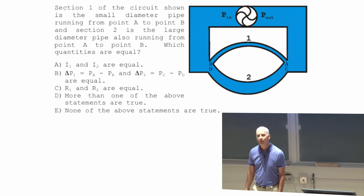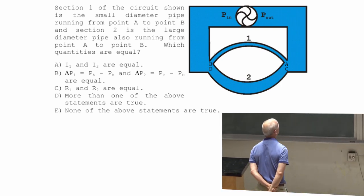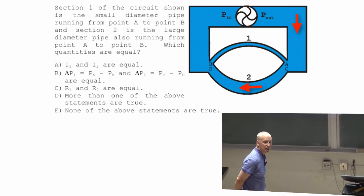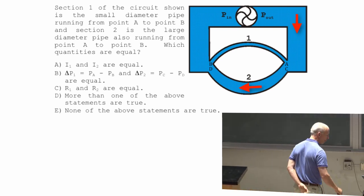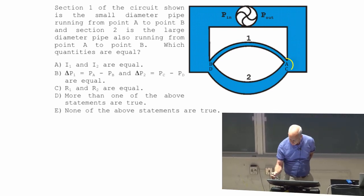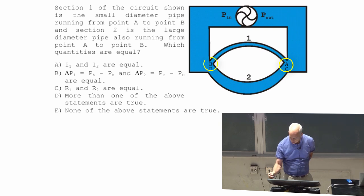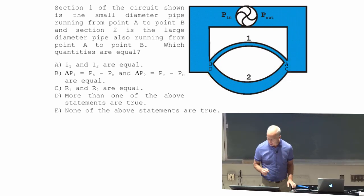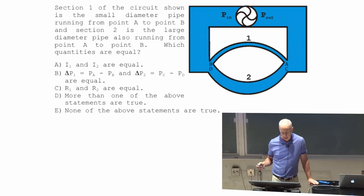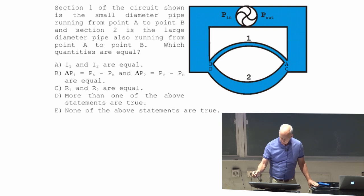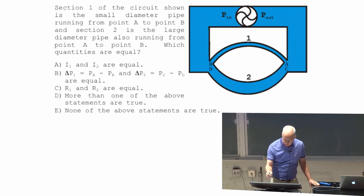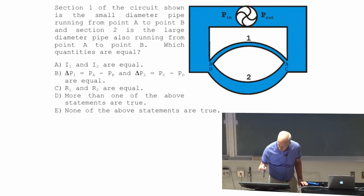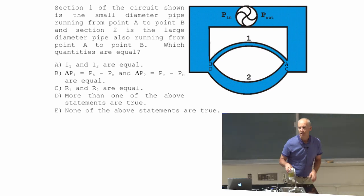All right, similar kind of thing, but I put these two resistances together in different ways. Still clockwise current. Now the two points, so section one goes from A right here to B. Section two goes from C, which is basically the same point as A, all the way around to D. So my question for you now is the same question. Which of the quantities are equal? I through section one equals I through section two, or delta P's are equal, or the resistances are equal, or what? Talk about it all you want.